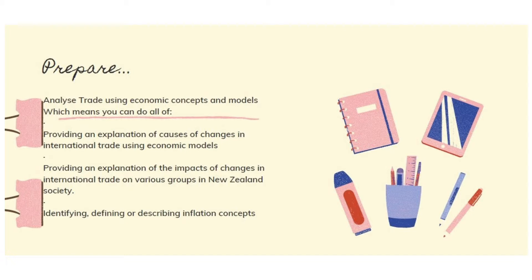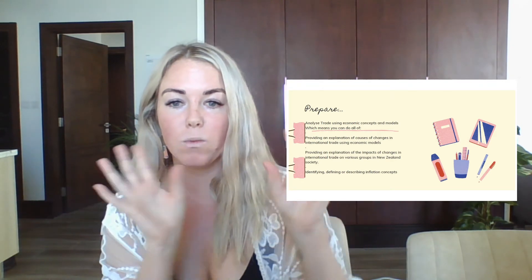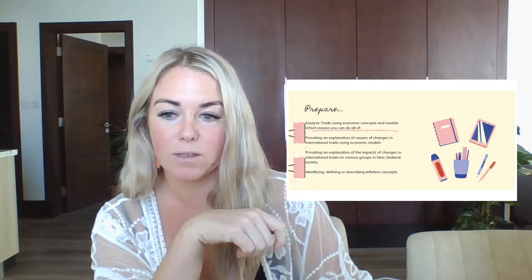The second objective is to provide an explanation of the impacts of changes in trade on various groups. For example, if New Zealand cannot export its meat anymore to Qatar, what's the impact on households in New Zealand, on farmers, and on the government? You have to think about what's moving back and forth between the world and then what the impact is back in New Zealand.